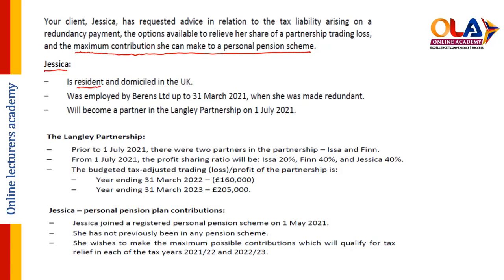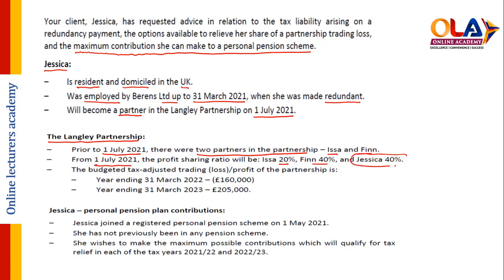Jessica is resident and domiciled in the UK. She was employed by B Limited up to 31st March 2021 — that is in tax year 2020/21 — when she was made redundant, and will become a partner from 1st July 2021. Prior to 1st July there were two partners in the partnership, I and F. From 1st July the profit sharing will be: I — 20%, F — 40%, and Jessica — 40%. This is a case of admission of a new partner, and for a new partner the commencement rule of business basis period is applicable.